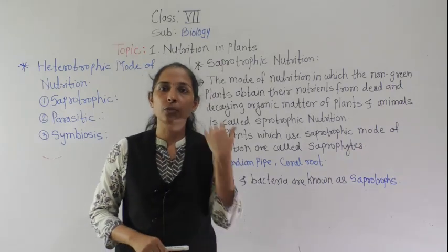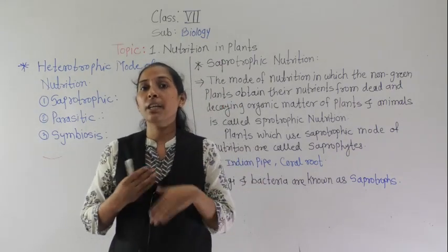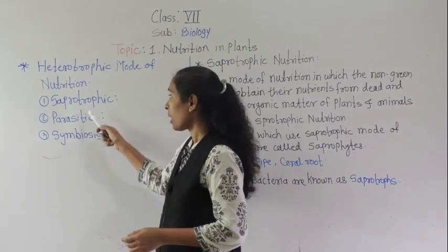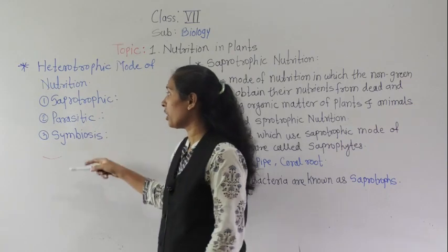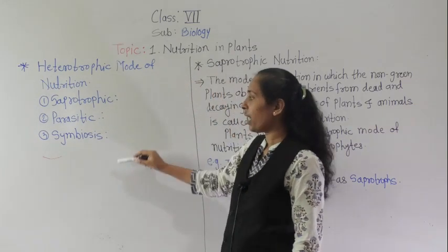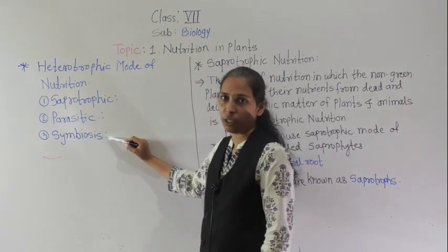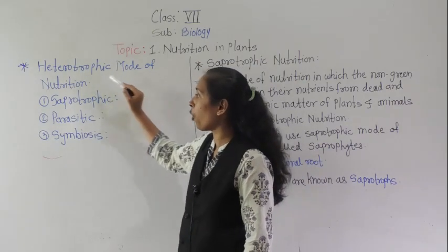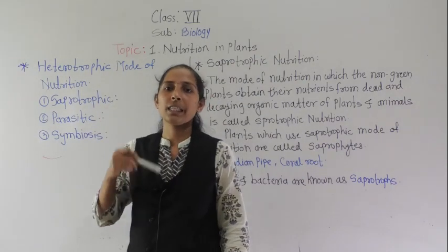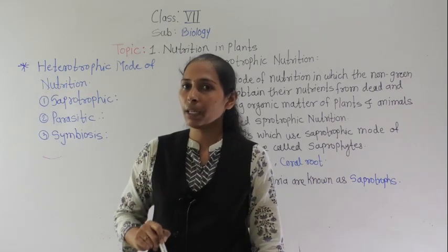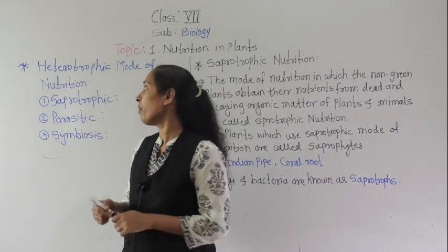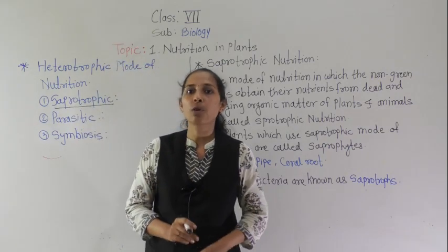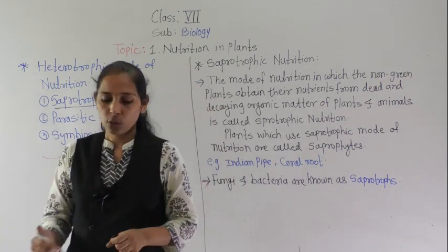The heterotrophic mode of nutrition has different types: saprotrophic mode of nutrition, parasitic, and symbiosis. These are the three types of heterotrophic nutrition, and we are going to see each type deeply one by one. Today we will start with the first type, that is the saprotrophic mode of nutrition.